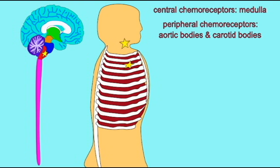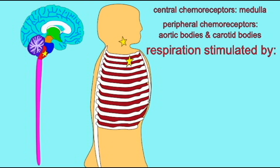There are two specific regions in blood vessels — in the arch of the aorta and in the carotid bodies where the common carotid branches into the internal and external carotid — that possess chemoreceptors which measure the amount of acid in the blood, the amount of carbon dioxide, and the amount of oxygen.